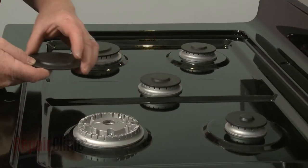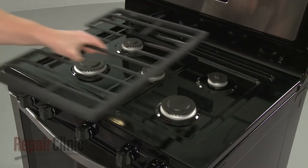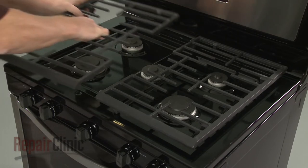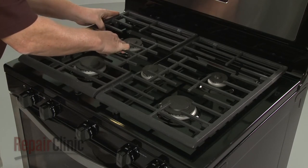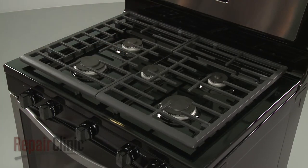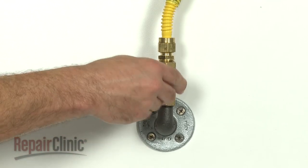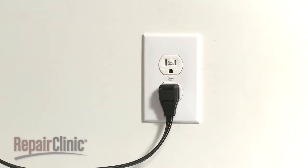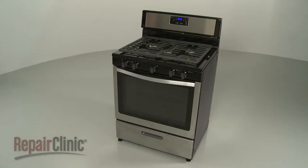Replace the burner caps and reposition the grates. With the repair completed, turn the gas supply back on. Plug the power cord back in, and your range should be ready for use.